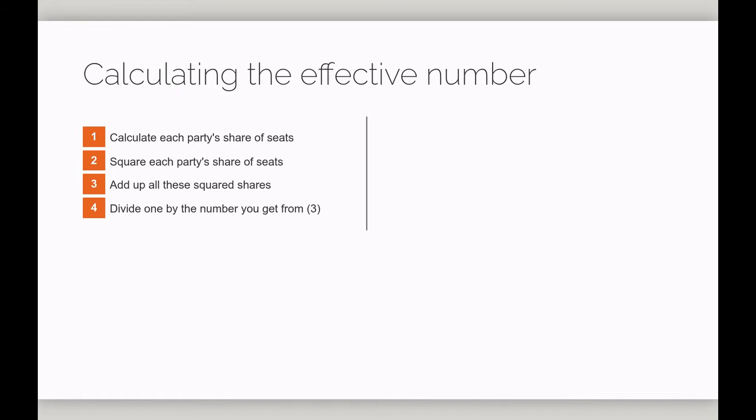We can express this as a formula. Here the big character that looks like an M turned on its side is the summation operator. It just means add up. And the little s stands for the seat share of each party.